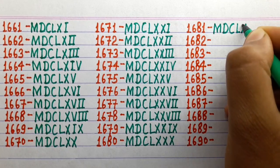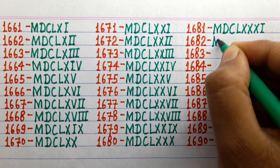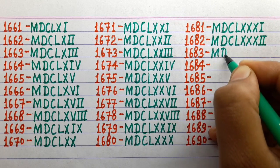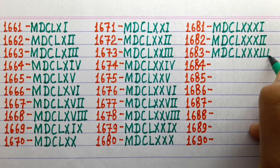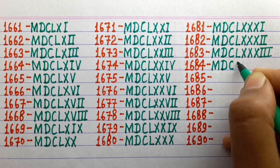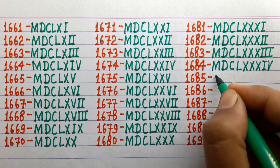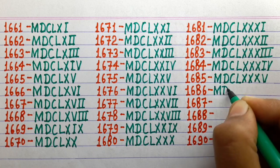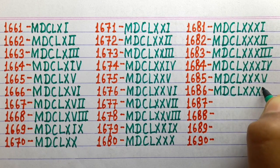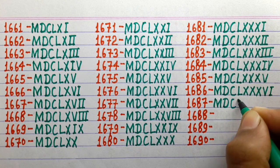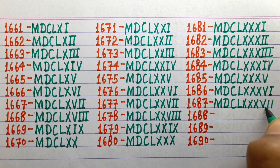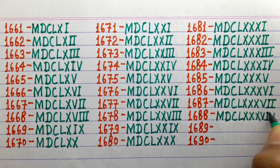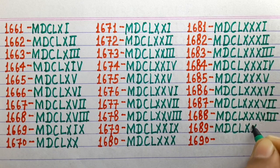1681 MDCLXXXI, 1682 MDCLXXXII, 1683 MDCLXXXIII, 1684 MDCLXXXIV, 1685 MDCLXXXV, 1686 MDCLXXXVI, 1687 MDCLXXXVII, 1688 MDCLXXXVIII, 1689 MDCLXXXIX.